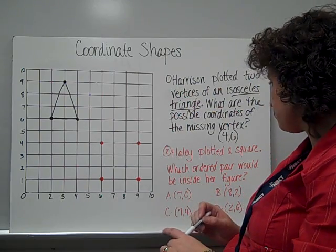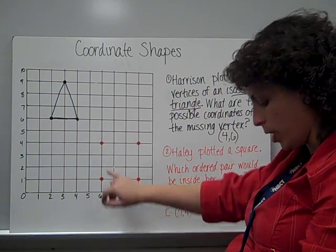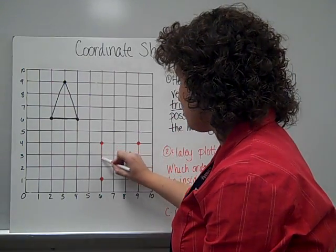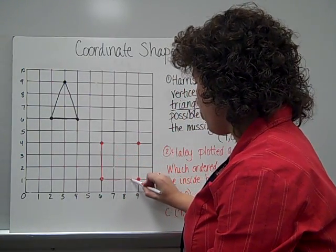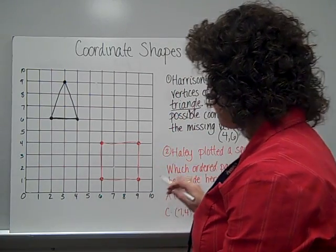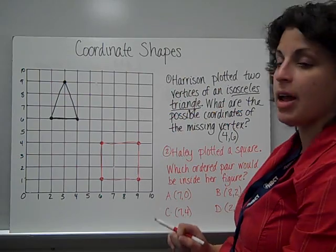On this next question, Haley has plotted a square. I see her four points. They've not been connected. So the first thing I'm going to do is go ahead and connect those points to see Haley's square. And now I have it.